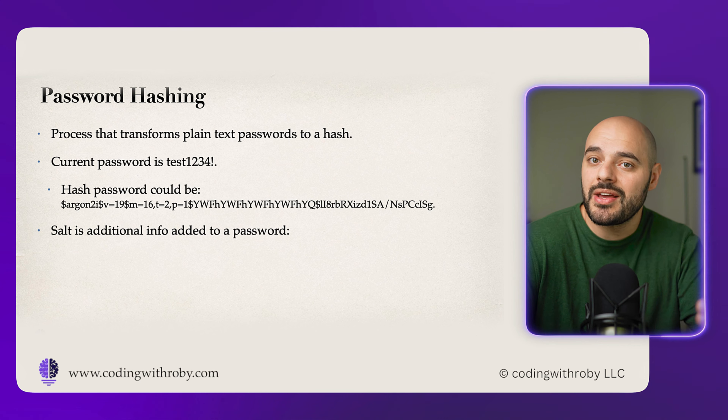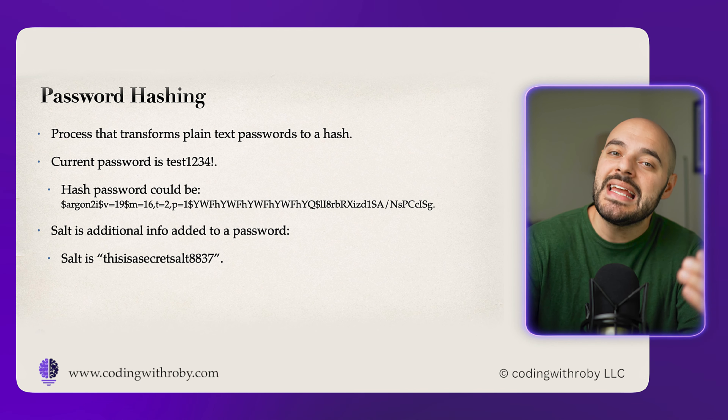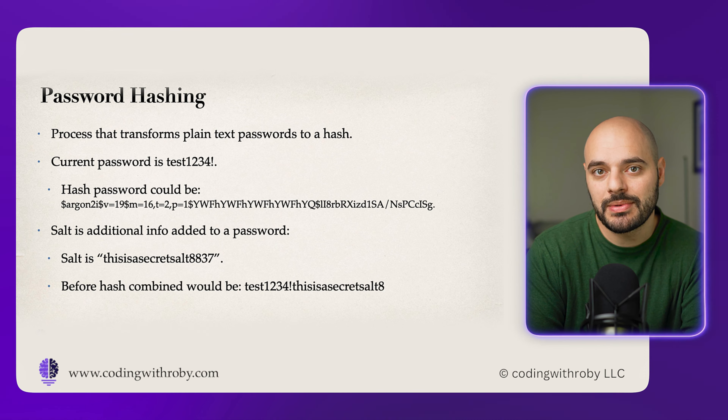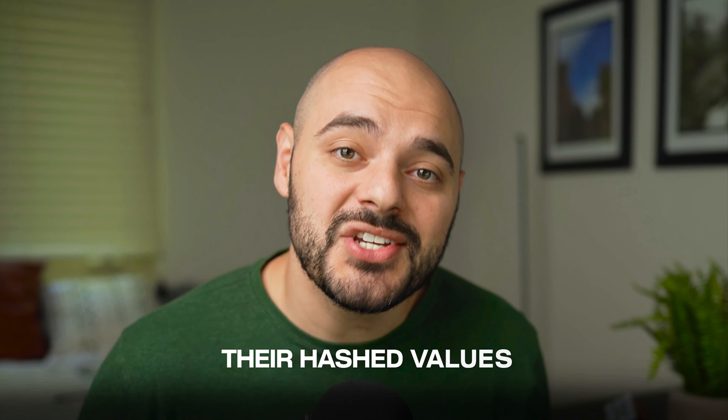Salt is an additional random value — in our case we're going to make it a static value — but it's hidden from the users, and it's added to the password before it's hashed. Its primary purpose is to prevent attackers from using pre-stored data, called rainbow tables, to reverse engineer the password from its hash. So if your salt is something like 'this is a secret salt 8837' and your password is test1234, those are combined and then hashed. This ensures that even if two users have the same password, their hashed values will be completely different.